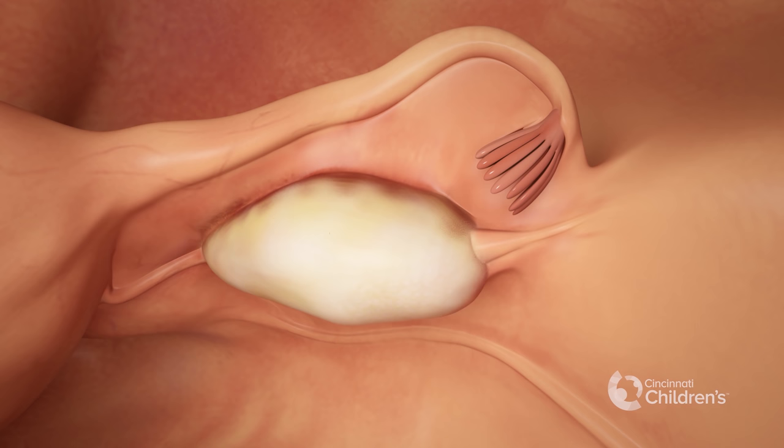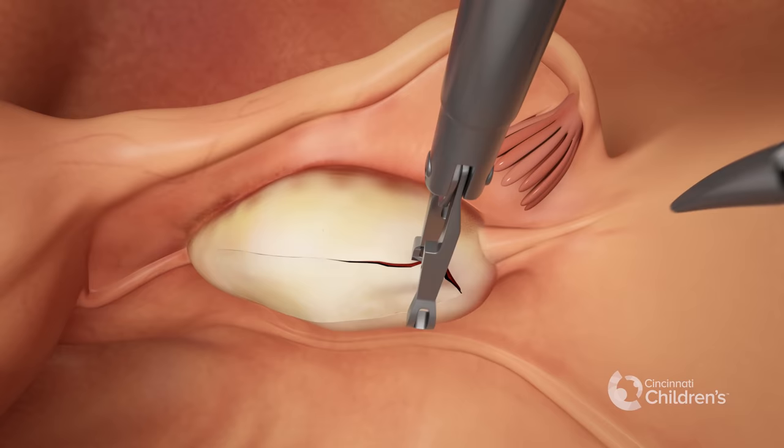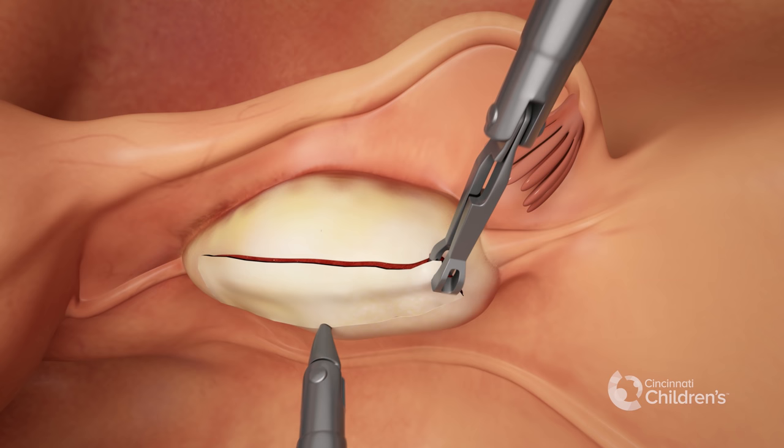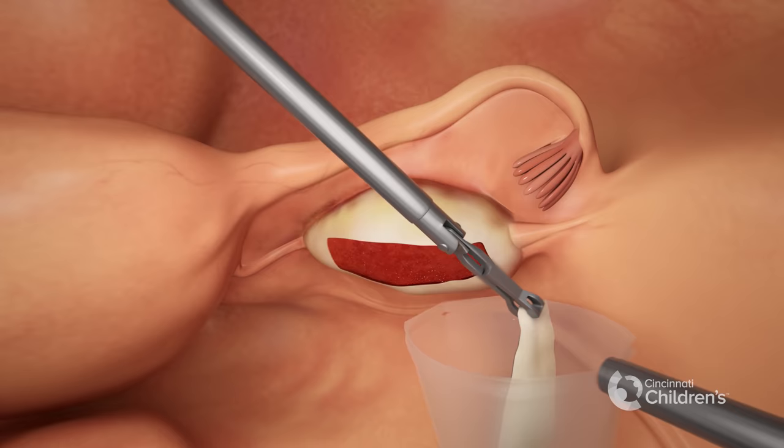If only a portion of the ovary is being preserved, then laparoscopic scissors are used to dissect the cortex from the rest of the ovary in strips. The tissue is then placed in a pouch and removed for processing. The surgeon confirms the surgical site is without bleeding and completes the surgery.